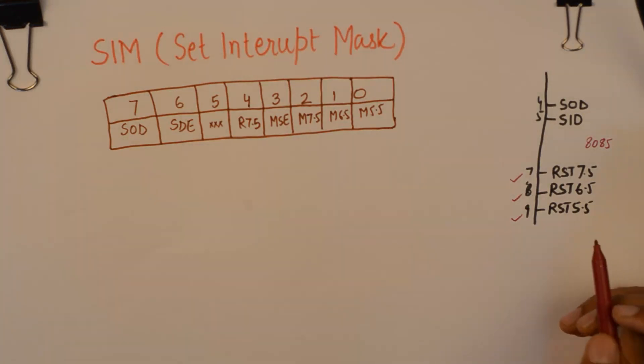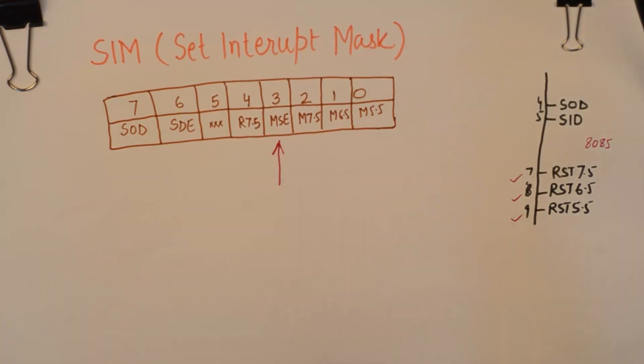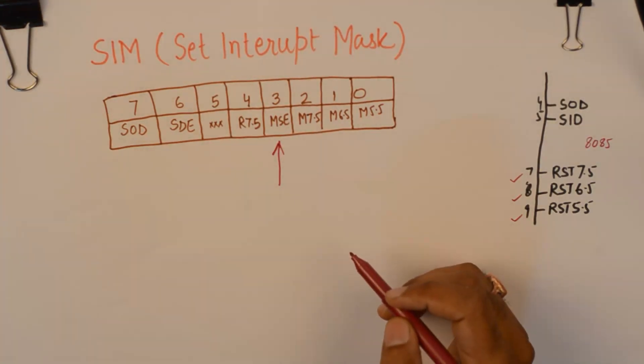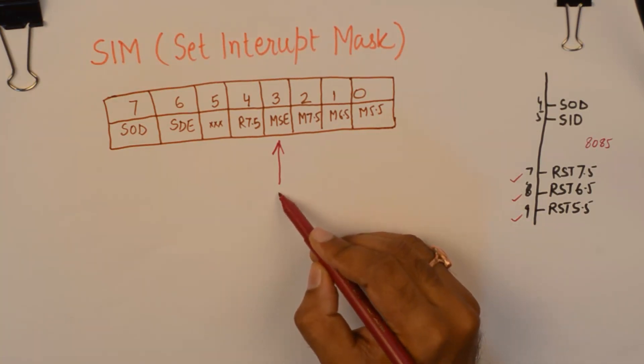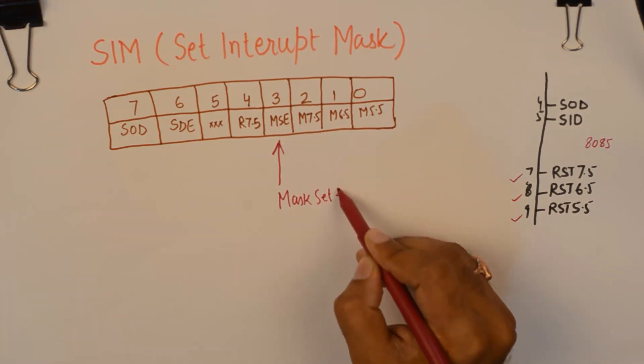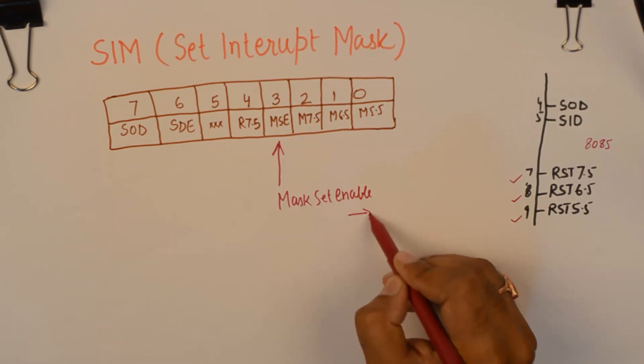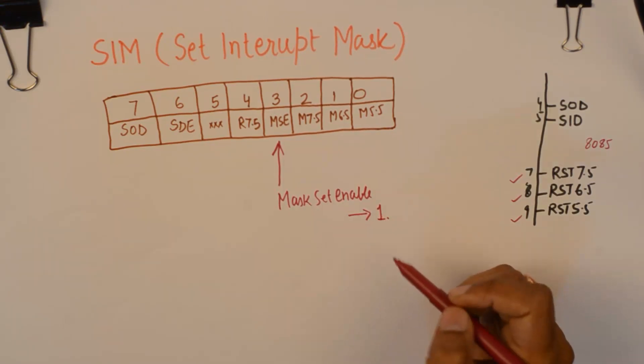To be able to mask these interrupts, you need to set the bit number 3 which is mask set enable. This bit needs to be 1 to be able to mask these three interrupts individually.